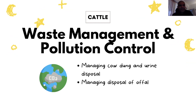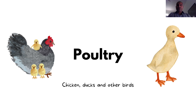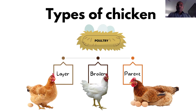Let's move on to poultry. Poultry refers to chickens, ducks, and other kinds of birds kept for eggs and meat. When we think of poultry farming with chickens, we can categorize chickens into three types: layers, broilers, and parents. These may be the same variety of chicken, but we treat them differently based on what purpose they're going to serve.